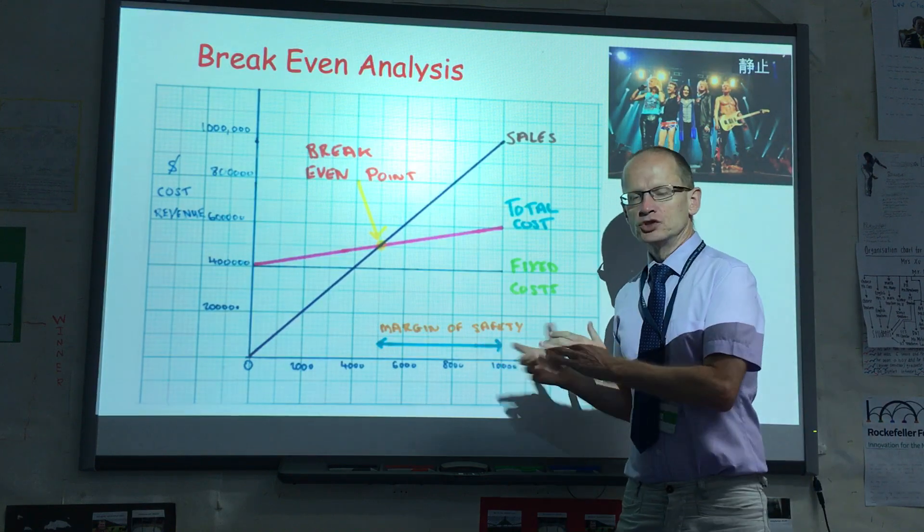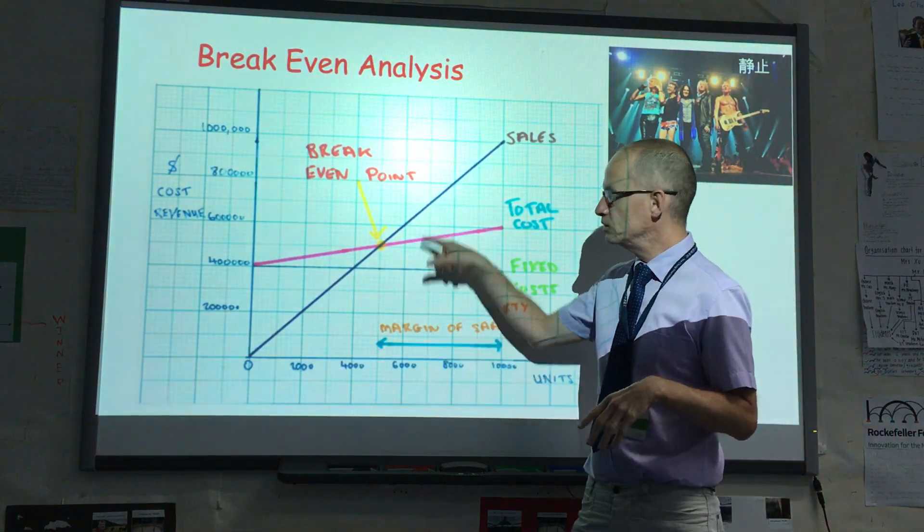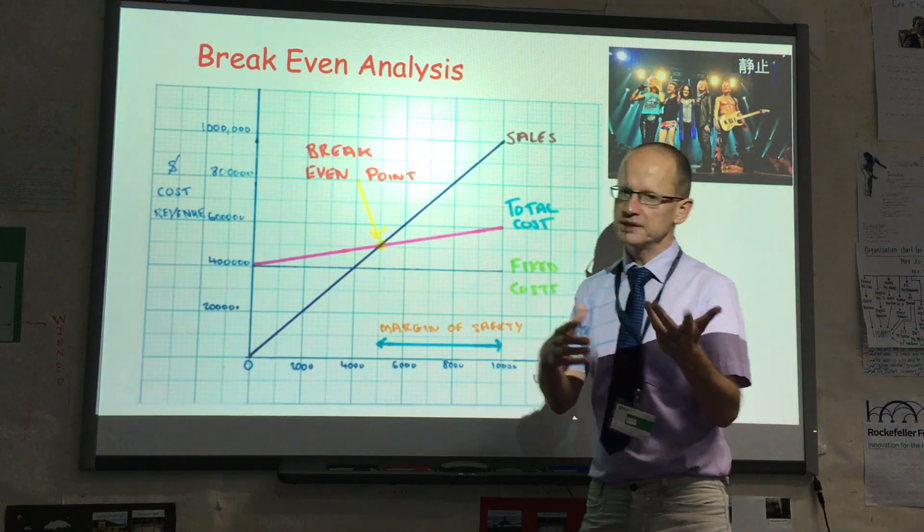So if the concert went ahead and they only sold 6,000 tickets, well obviously they would make a profit. A small profit, but nevertheless a profit.